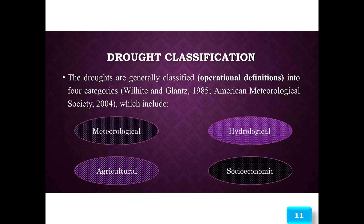Regarding drought classification, droughts are generally classified using operational definitions into four categories, as per Wilhite and Glantz (1985) and the American Meteorological Society (2004). These four categories include: meteorological, hydrological, agricultural, and socio-economic drought.